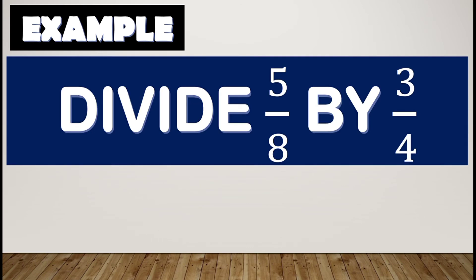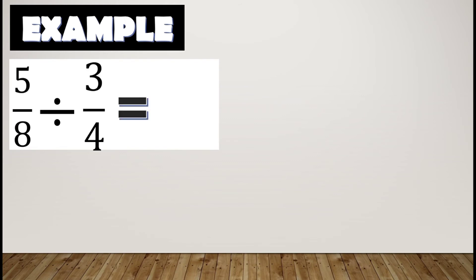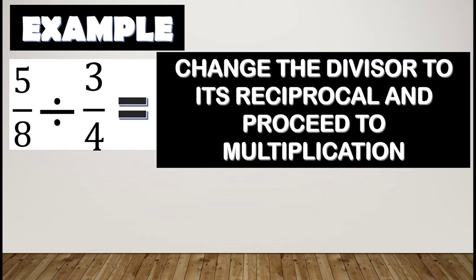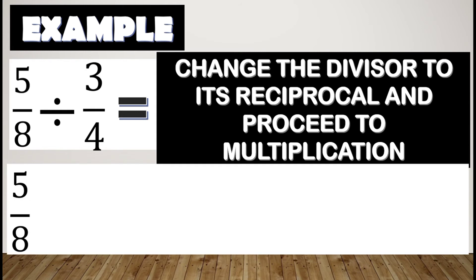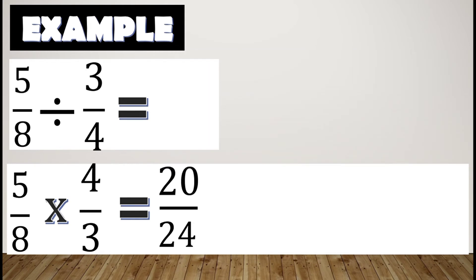Let us have example number two: divide five-eighths by three-fourths. Again, we will change the divisor to its reciprocal and proceed to multiplication. The divisor is three-fourths, so its reciprocal is four-thirds. Our new equation is five-eighths times four-thirds. Multiplying numerator times numerator and denominator times denominator gives us twenty over twenty-four.